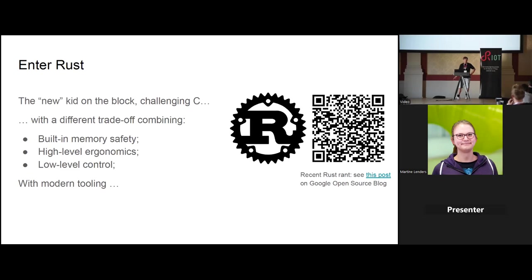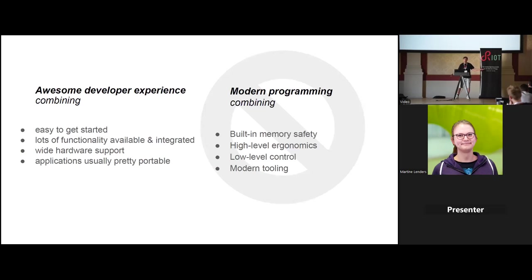Rust is this new language challenging C - similarly low level, full control, but it comes with memory safety. It also has a lot more high-level ergonomics and much more modern tooling. So we want the awesome developer experience from RIOT, we want modern programming, and we want Rust memory safety.